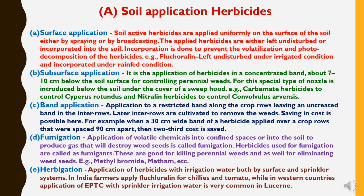The second method is subsurface application — the application of herbicides in a concentrated band about 7–10 cm below the soil surface for controlling perennial weeds. Special nozzles are introduced below the soil under the cover of a sweep hood, like carbamate herbicide to control Cyperus rotundus and nitraline herbicide to control Convolvulus.